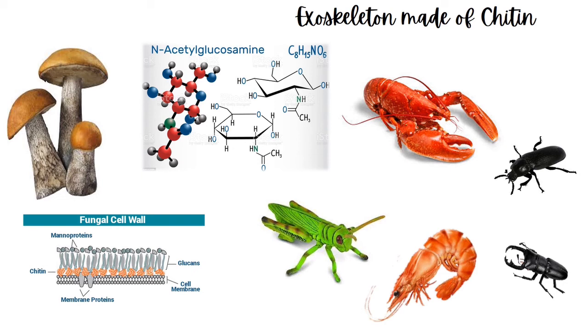Chitin is found in the exoskeleton of arthropods, particularly crustaceans. Chitin can also be found in the cell wall of fungi. This has an amino acid group attached to sugar molecules.